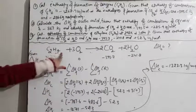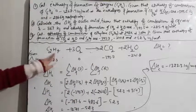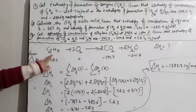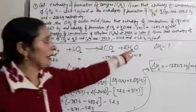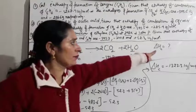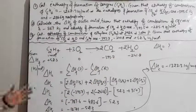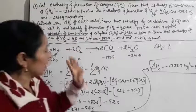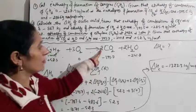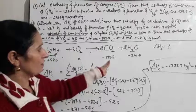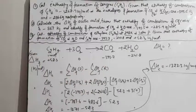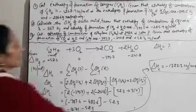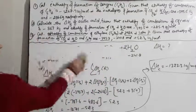Delta Hc = −1271 + 52.3 = −1323.3 kJ/mol. This value is per mole because C2H4 is 1 mol in the balanced equation. The key thing to remember is how many moles are being used — since the given values are per mole, multiply accordingly.